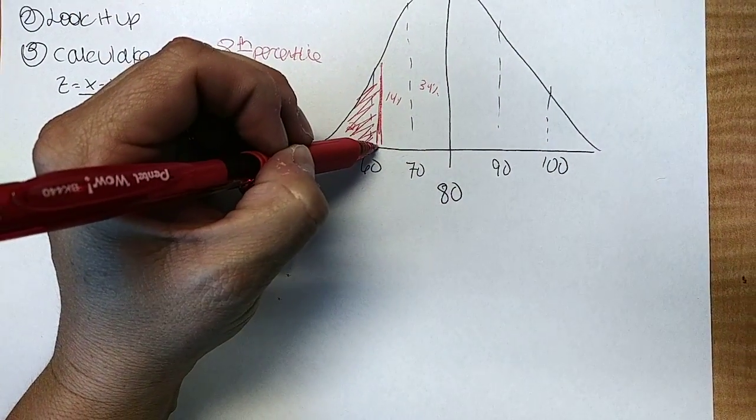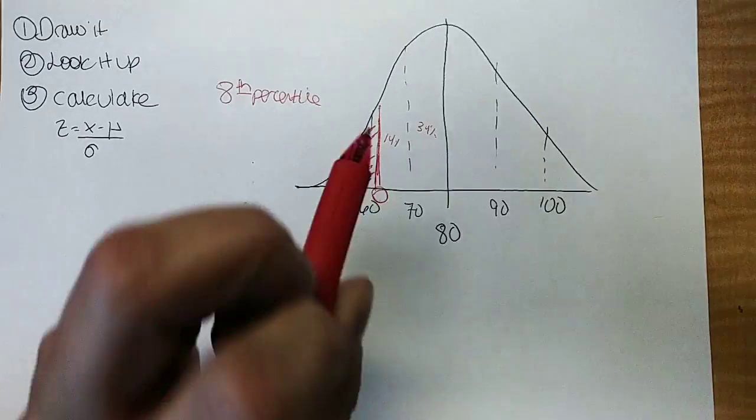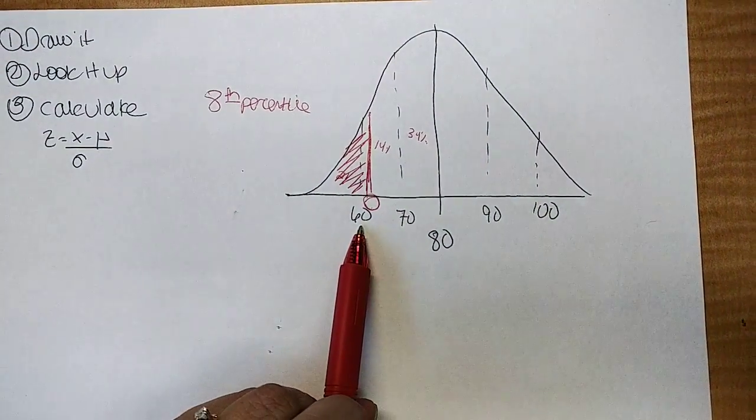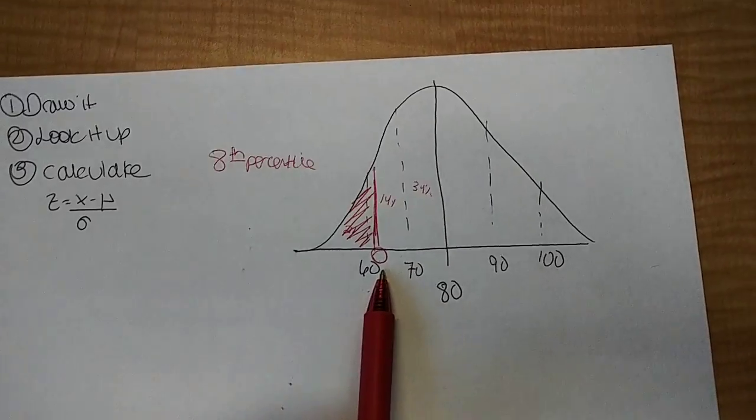Now, I don't know what number that is associated with yet, but I know it's going to be 60-something, right? It's going to be under 70, and it's going to be bigger than 60. So now I want to try and work backwards to figure out what that score would be.